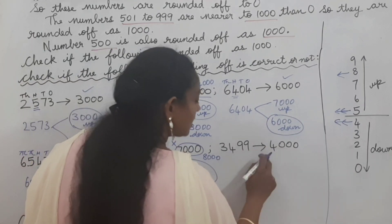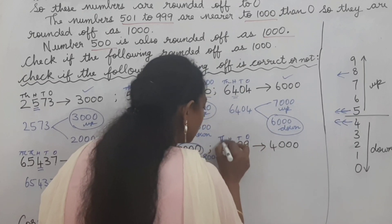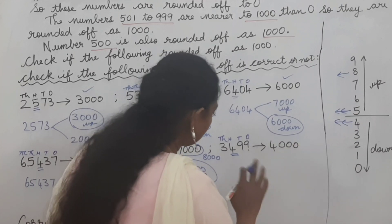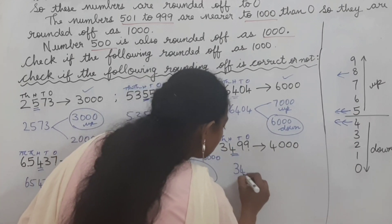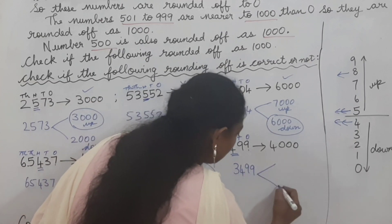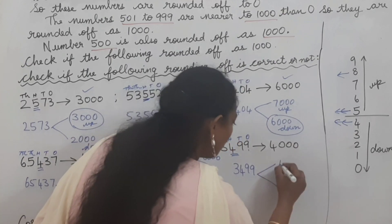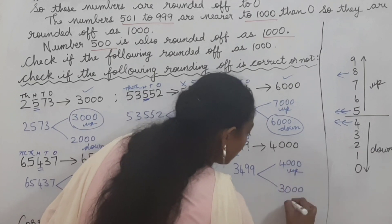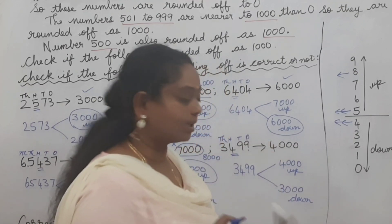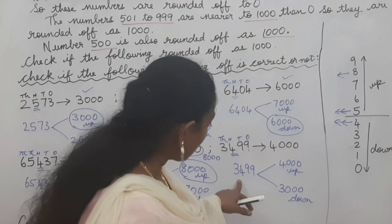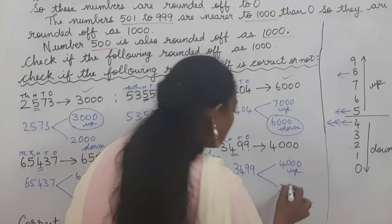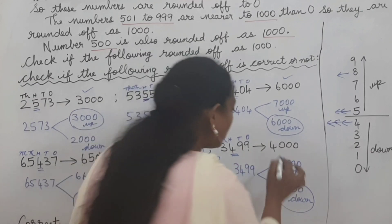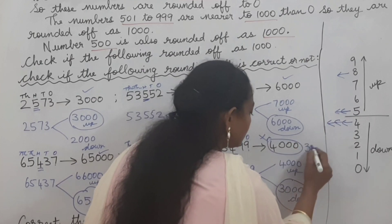Next: 3,499 is rounded off to 4,000 - we check whether it is correct. Write ones, tens, hundreds, thousands. We look at the hundreds place, which is 4. From looking at it, we can tell it is wrong. Write 3,499 and put two arrows. The thousands digit 3 stays below and becomes 4 above, followed by three zeros - giving 3,000 below and 4,000 above. The hundreds digit 4 is in the lower range, so we round down to 3,000. The answer 4,000 given in the book is wrong - the correct answer is 3,000.